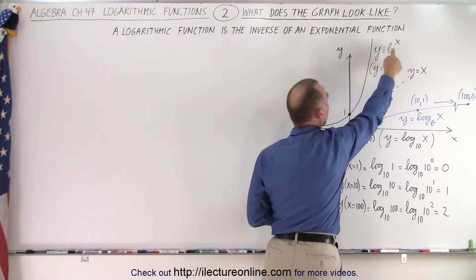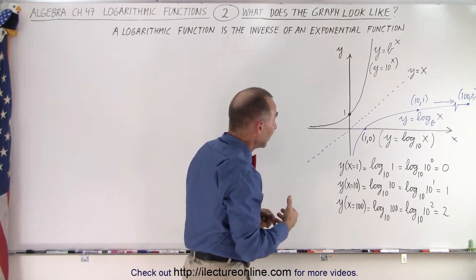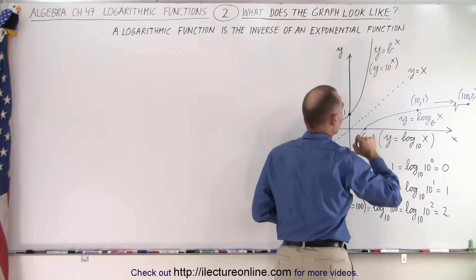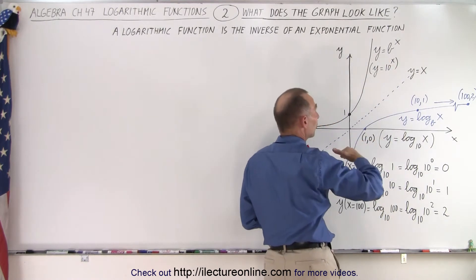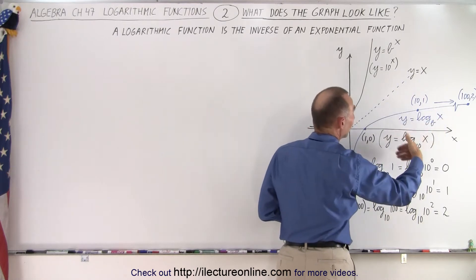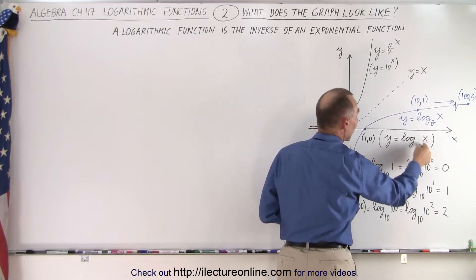y equals b to the x. Now, let's say that b, the base of that exponential function, is equal to 10. So we can say that this is y equals 10 to the x. Then, the logarithmic function can be written as y equals the log to the base b of x. And in this case, if the base is 10, we can write as y equals log base 10 of x.